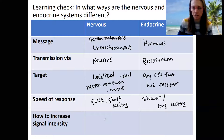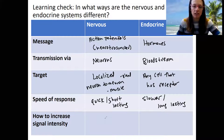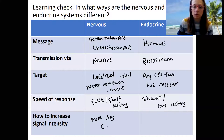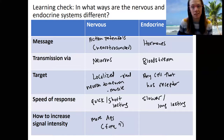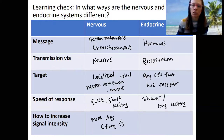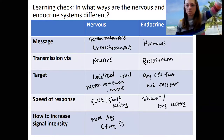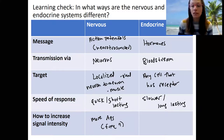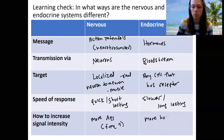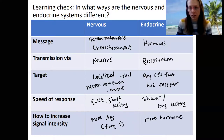To increase signal intensity in the nervous system, you produce more action potentials — frequency increases — because action potentials are all-or-nothing, one size. More frequent action potentials produce a stronger response. If you want more signal in the endocrine system, you produce more hormone. More hormone produced and released results in a stronger effect. Those are important different aspects of the two systems.